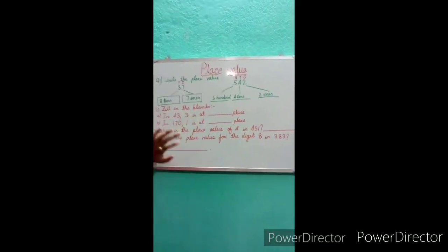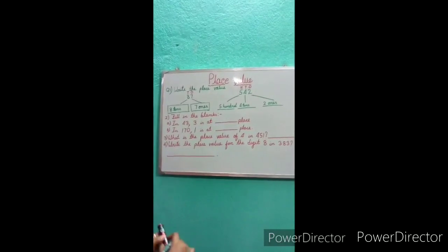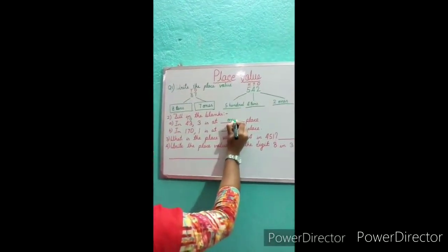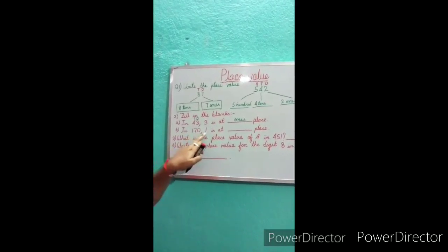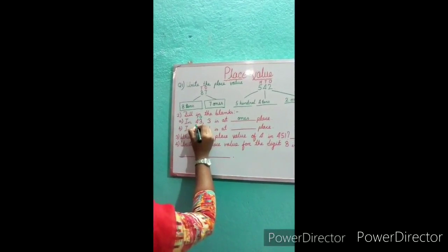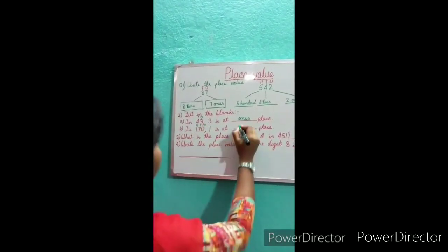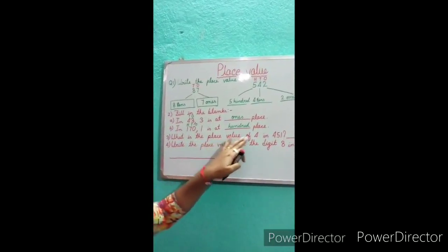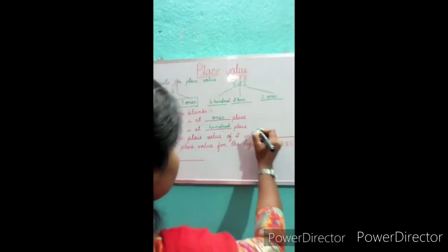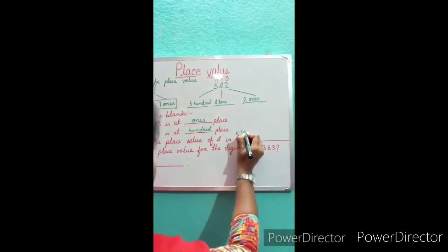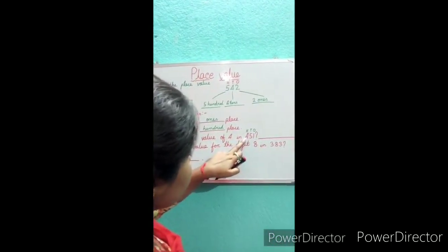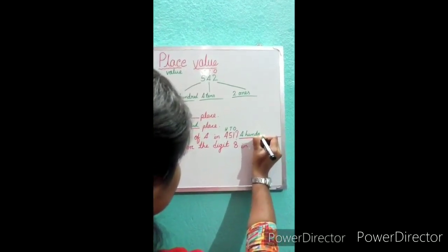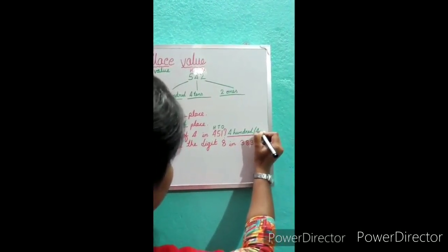Next question — fill in the blanks. In 43, 3 is at which place? We write tens and ones — so 3 is at ones place, we write 1. Next: in 171, 1 is at which place? We write hundreds, tens, ones — 1 is at the hundreds place, so we write 100. Next: what is the place value of 4 in 441? 4 is at the hundreds place, so the place value is 400.